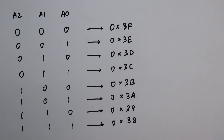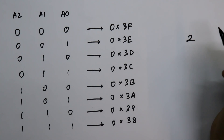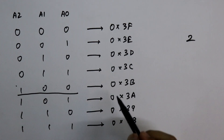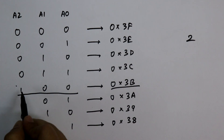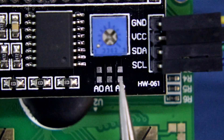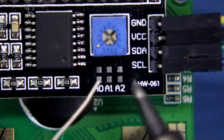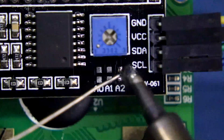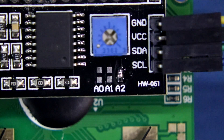Now the main question is: why do we need to change the address? Let's say you are going to use two I2C devices and the address of both devices is the same. In that condition, we have to change the address of one of the modules. For example, I will show you by changing the address — let's say connecting A2, so it will be 0x3B. Now I am going to solder this A2 pad. It is soldered.